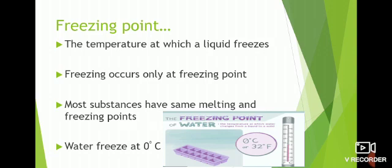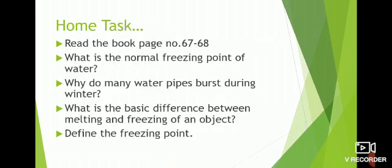The reason freezing and melting points are the same is that this temperature is a transition temperature — the temperature at which substances change their state. For example, if you have water in liquid form at zero degrees Celsius, it changes into solid form, so that is the freezing point. But if you have water in solid state at zero degrees Celsius, it changes into liquid form, so we call it the melting point of water or ice.